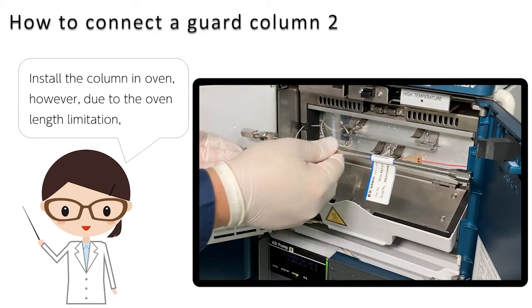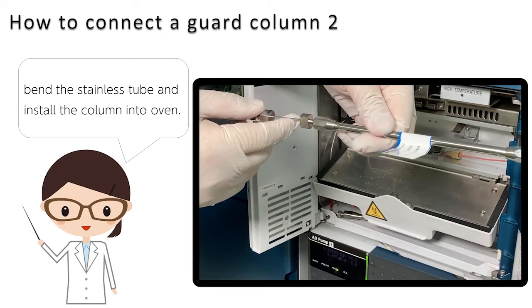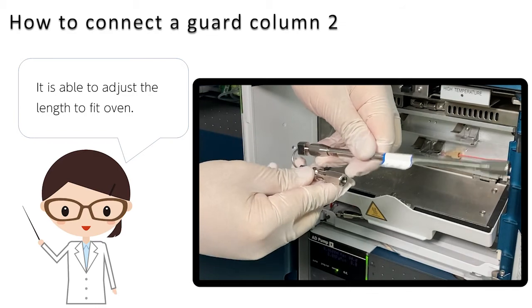Install the column in the oven. However, due to oven length limitations, bend the stainless tube and install the column into the oven. It is able to adjust the length to fit the oven.